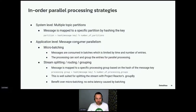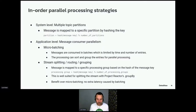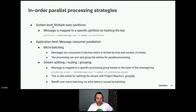I'll talk about in-order parallel processing strategies, because typically in many messaging applications certain messages must be processed in order. If there's a total order across all messages in a topic, there's no way to improve performance through parallelism — you'd have to process one at a time. One general system-level solution is to use multiple topic partitions, where messages are mapped to a specific partition by hashing the key. The partition is calculated by taking the hash of the message key modulo the number of partitions.